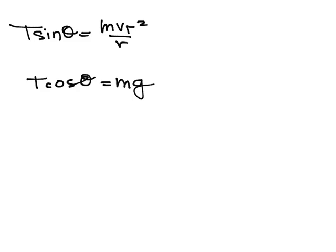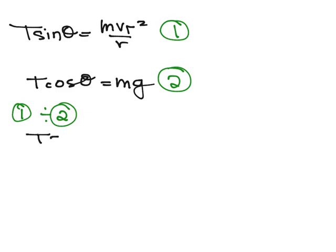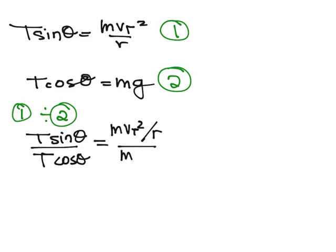I'm going to name these equations 1 and equation 2, and I can divide equation 1 by equation 2. I'm going to do equation 1 divided by equation 2 as long as I do it on both sides. So I have T sine theta divided by T cosine theta, and that's equal to m vt squared over r divided by mg. The magical thing is that my T's cancel out and sine divided by cosine is equal to tangent theta.